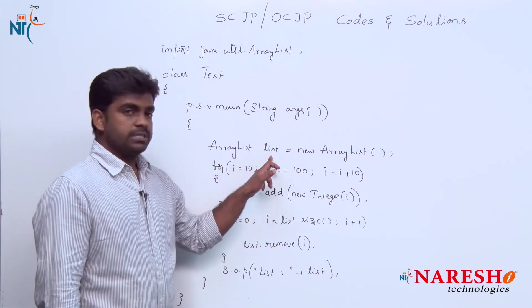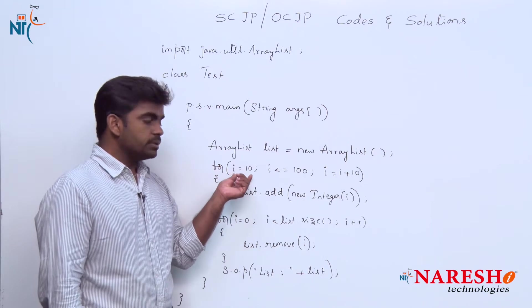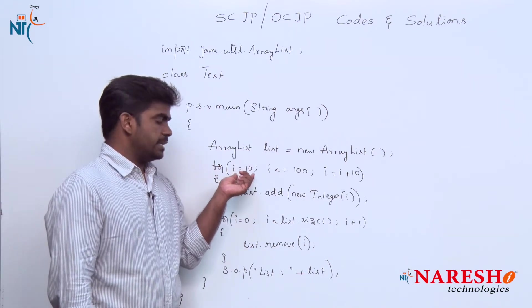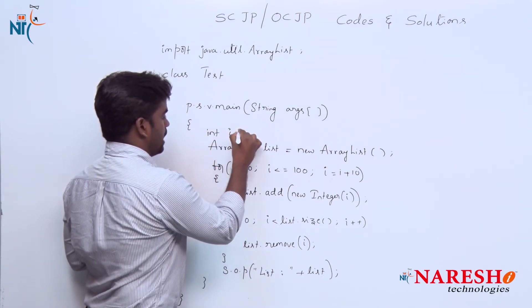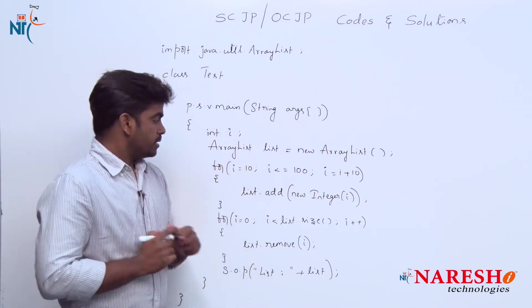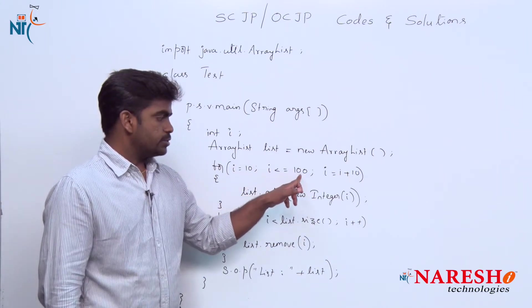Once the object is ready, we are storing some elements with the help of a loop. We need to declare integer i as a variable. The i value starts with 10, i is less than or equals to 100, i equals to i plus 10. First, i value starts with 10. 10 is less than or equals to 100, condition is true, control moves inside.